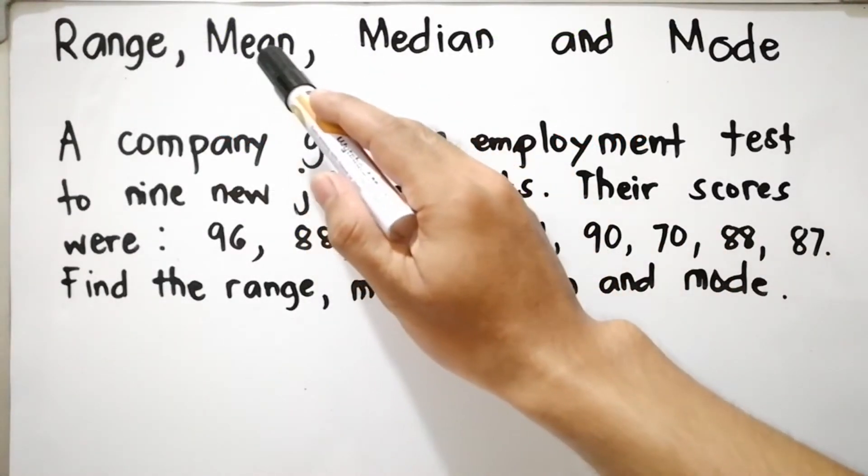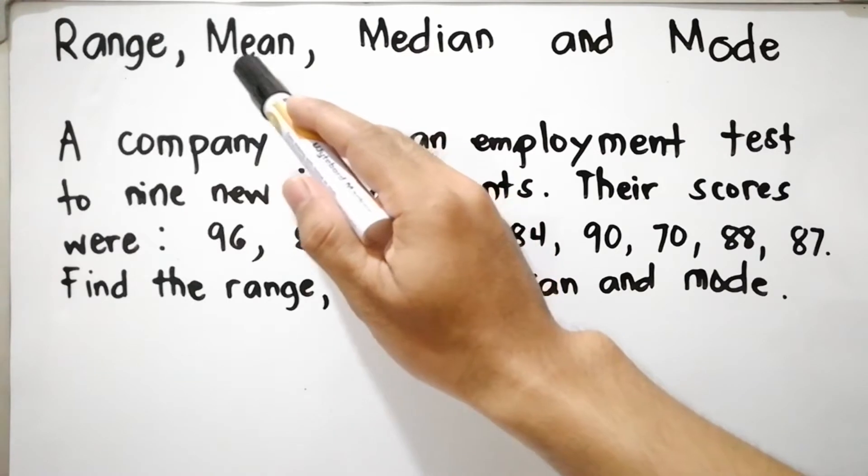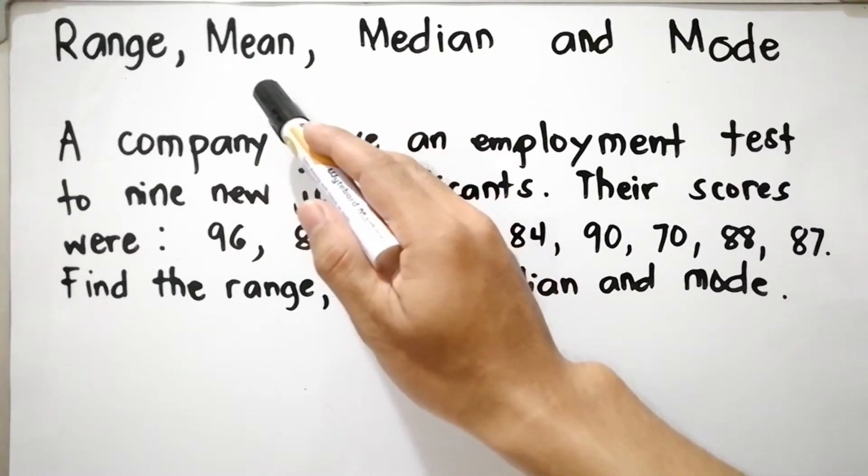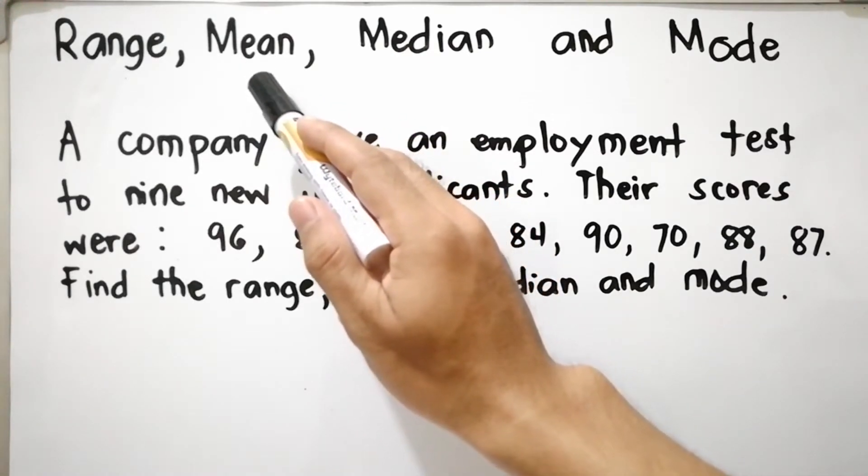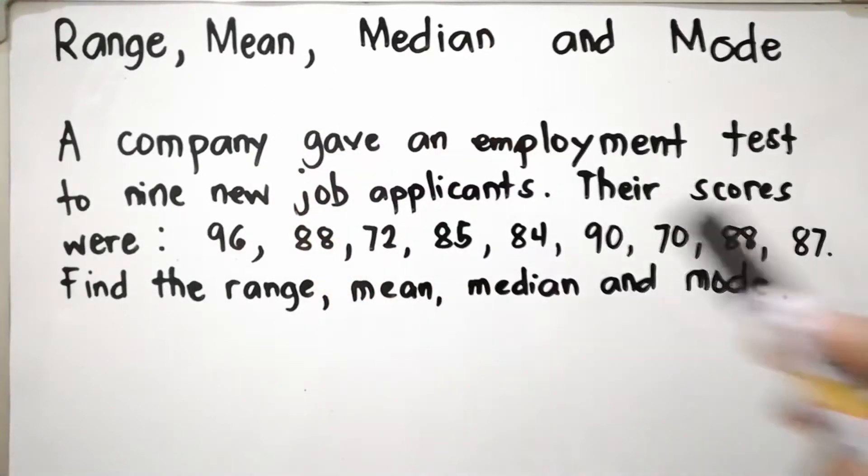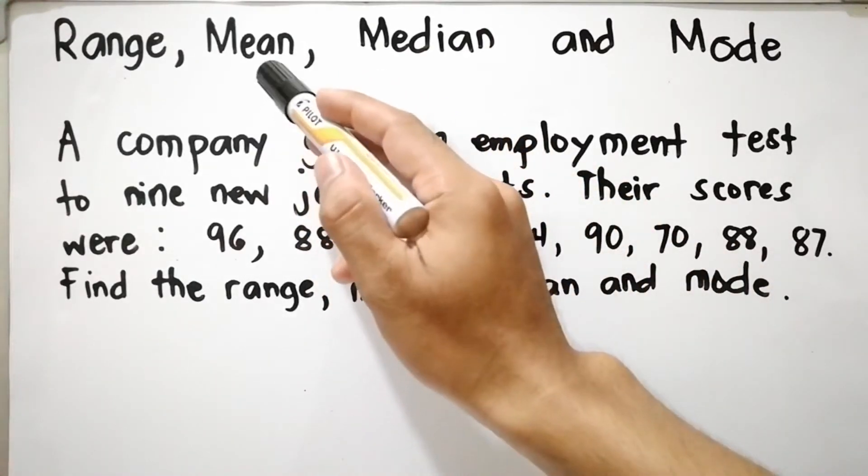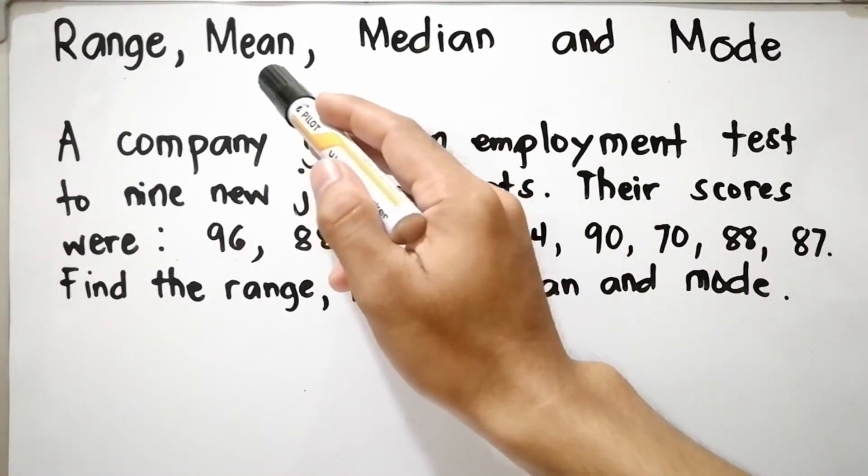Mean is the average of the score, so it is denoted as X-bar which is the sum or summation of the score divided by N. The mean is affected by extreme values, the high scores and the low scores.